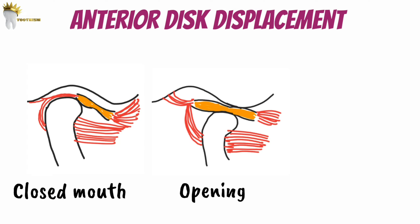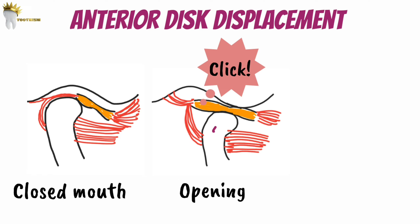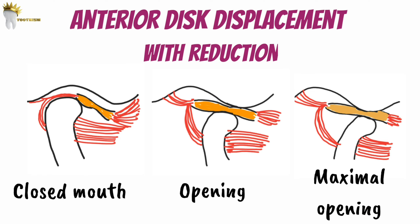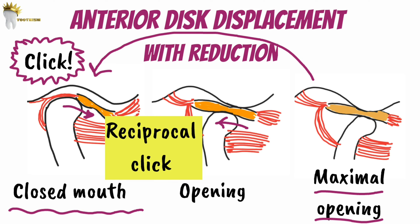In this case, when you open the mouth, the condyle moves over the posterior band of the disc — it kind of snaps under the posterior band, which creates the clicking noise. Now the disc is back to its normal position on top of the condyle. That's why it's called disc displacement with reduction, because the disc is reduced to a normal position for the remaining part of the opening cycle, as seen at the maximal opening position. On closing the mouth, the disc will slip off the condyle and return to its anterior position, which can also create a clicking sound. When clicking happens both during opening and closing, it's called a reciprocal click.